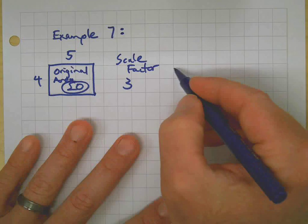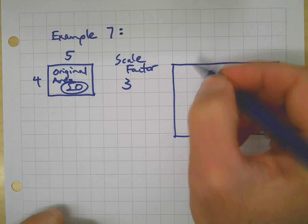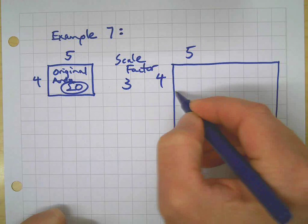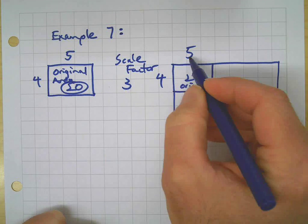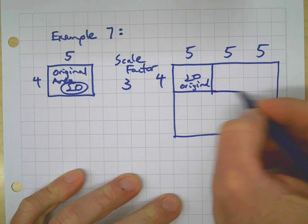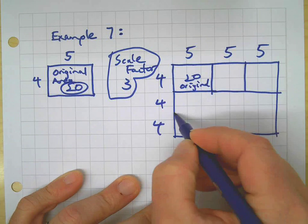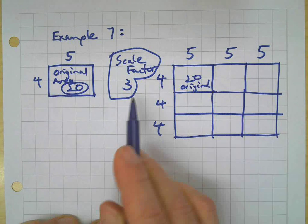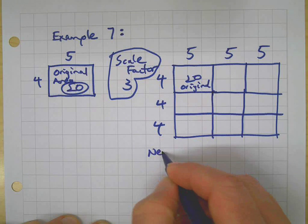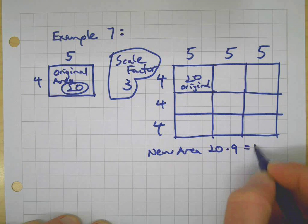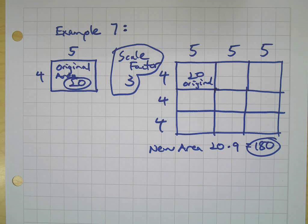What is the new area? We're going to use a generic rectangle model here — it's not to scale, we just know it's going to be bigger. If I take my original dimensions, there's my four times five. My scale factor is three, which means the five gets multiplied three times, and the four also happens three times. So my scale factor is three, but my original area is being multiplied by nine. The new area is the original times nine, which is 180.